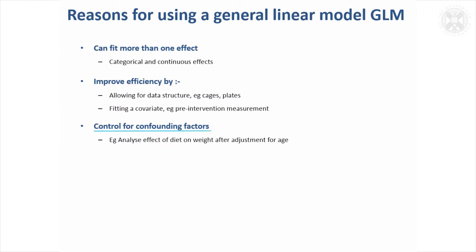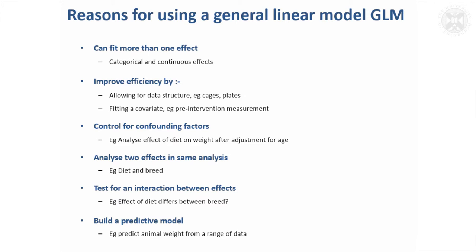Control for confounding factors. If we were looking at the effect of diet on weight we might want to control for animal age. It's useful to be able to analyze two effects in the same analysis and look at their interaction. And also sometimes we might be interested in building a predictive model, predicting something from a range of measurements and observations. So yeah, very useful class of models.